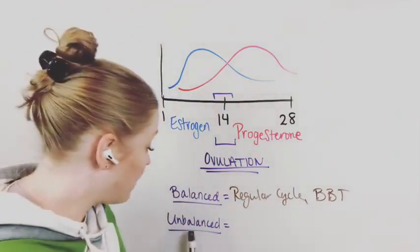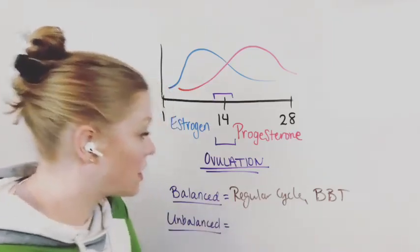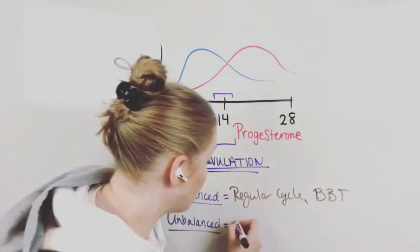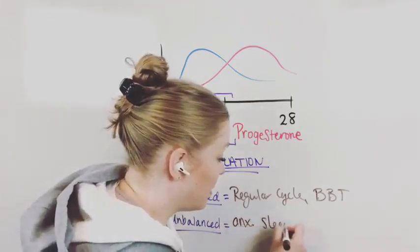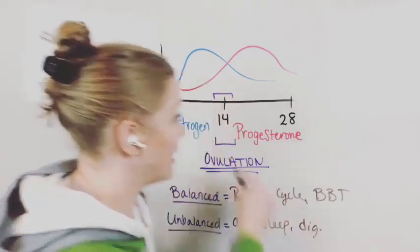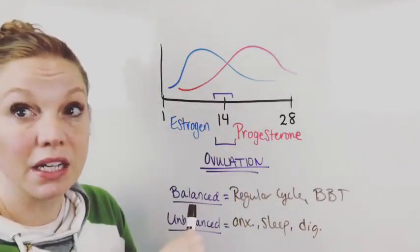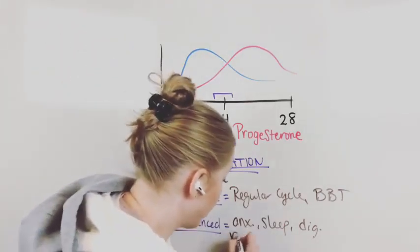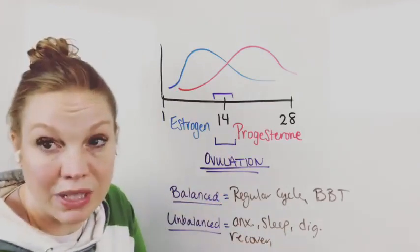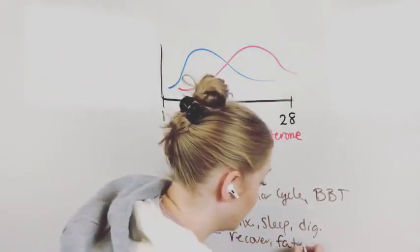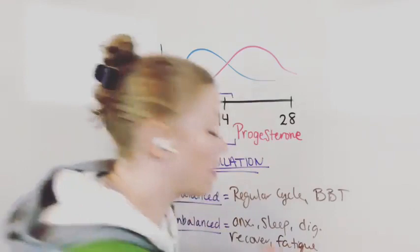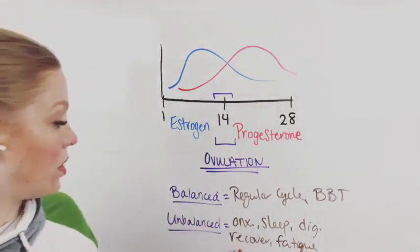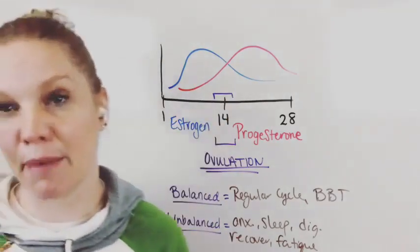If you don't have a regular cycle, if they are unbalanced, your ovulation is going to be all over the place. You're not going to have a change in basal body temperature. And then you can also have anxiety issues, sleep issues. You can have digestive issues at this time, at this time specifically. You can also have a hard time recovering from workouts. Recovery can also be really terrible. And then you can also have a ton of fatigue. There can be some other things thrown in there, but those are a lot of things that can happen in the body when we're looking at your hormones being unbalanced right around the time of ovulation.